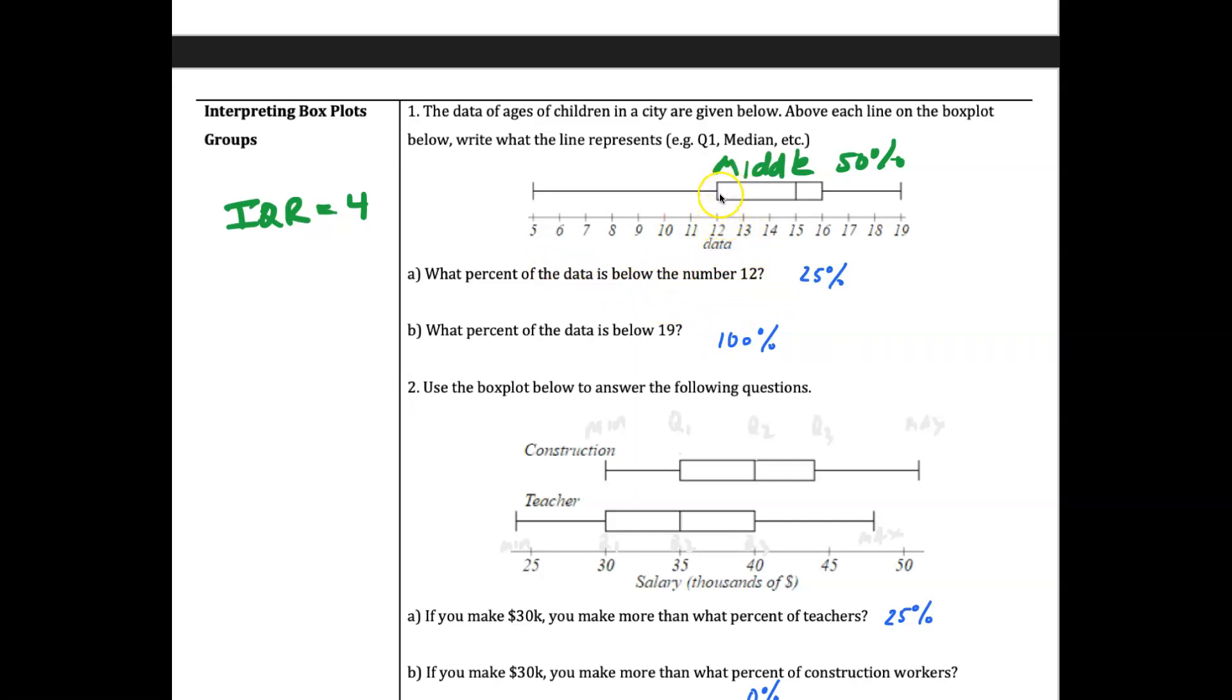Looking at the data here, what percent of the data is below 12? Here's 12. From these values we have the min, Q1, median or Q2, Q3, and then the max. We know that 25 percent - because the way the data in a box plot is broken up - is broken up into quarters. So here's the bottom 25, the next 25, here's 50 to 75 percent, and 75 to 100.